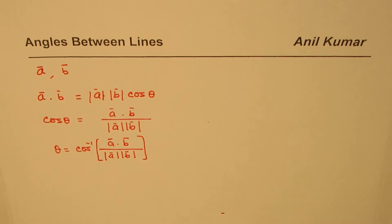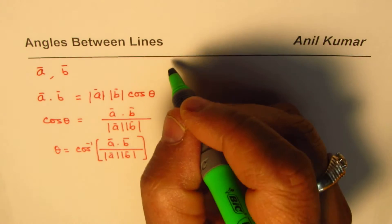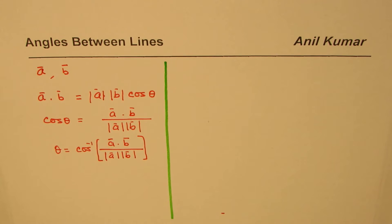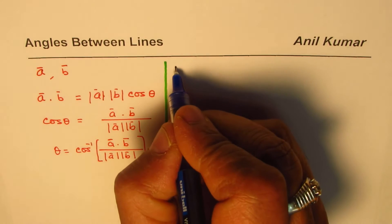That gives you an expression to find the angle between any two lines. Now what are a and b in context of lines? It really depends on the type of line you're given.